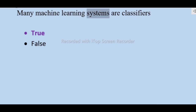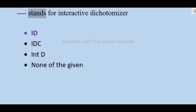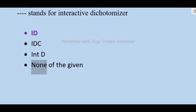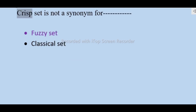Many machine learning systems are classifiers — true. ID3 stands for Interactive Dichotomizer — none of the given. A crisp set is not a synonym for fuzzy set; it is a classical set.